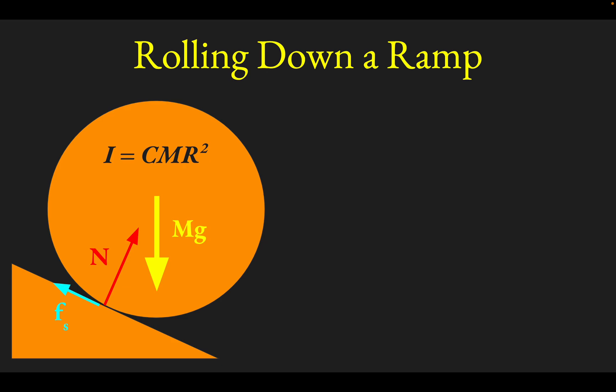And then there's going to have to be some kind of a friction acting up the ramp. It's going to be a static friction, we'll assume, rolling without slipping. Now that we've drawn the forces, let's pick some axes. Let's choose an x-axis pointing directly down the ramp and a y-axis perpendicular to the ramp.